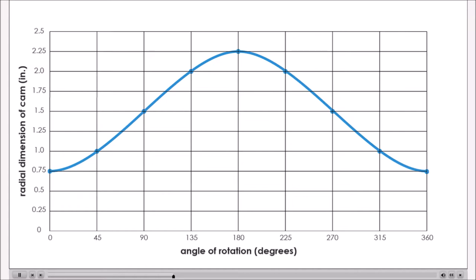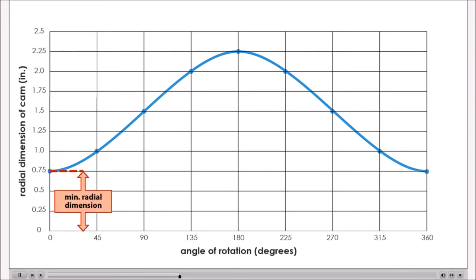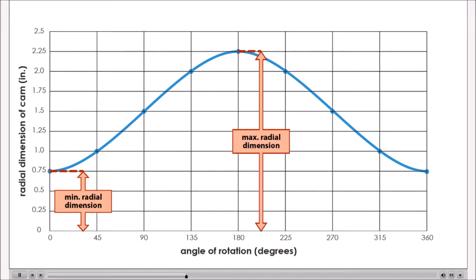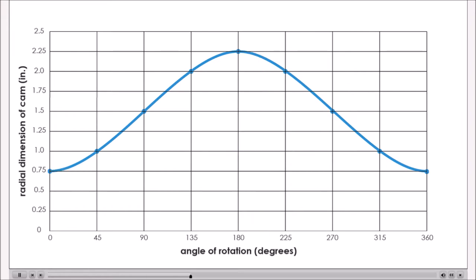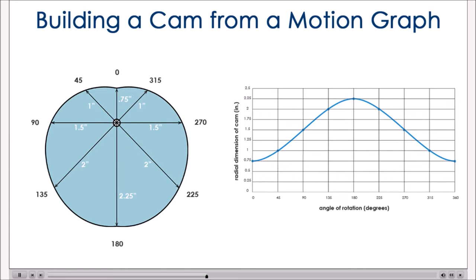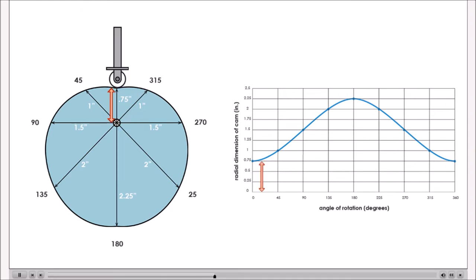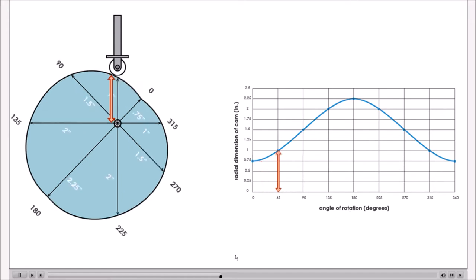Study the graph. The minimum radial dimension of the cam is 0.75 inches. The maximum radial dimension is 2.25 inches. The maximum displacement of the follower will be 2.25 minus 0.75, or 1.5 inches. This cam was designed to produce the motion indicated in the motion graph. The angle of rotation is shown on the face of the cam, and the cam will rotate clockwise. As it rotates, the follower moves up and down as the radial dimension changes. When the cam has rotated 45 degrees, the dimension to the point of contact with the follower is 1 inch.